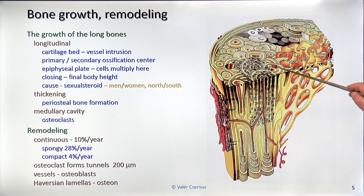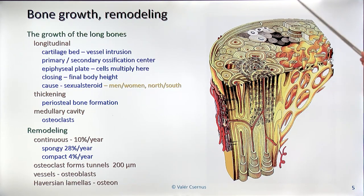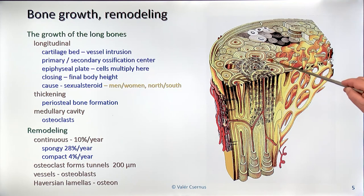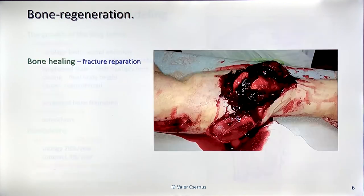Whatever remained between the osteons after the osteoclasts drilled through is preserved as the interstitial lamellae.